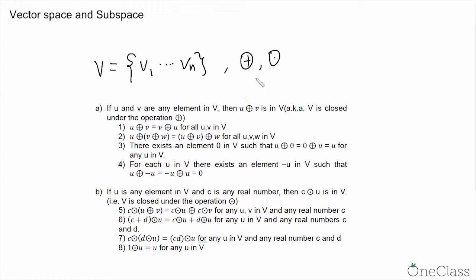And if these two operations, addition and scalar multiplication, satisfy the following conditions from 1 to 8, then we call this set v a vector space.